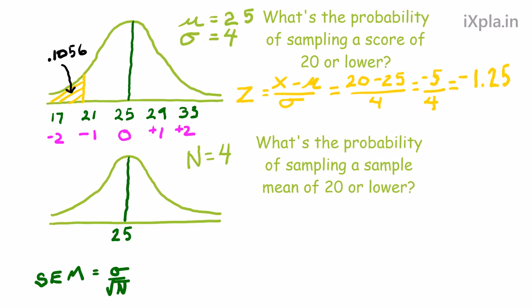Well, we figure that out by using the SEM, the standard error of the mean. We plug in the numbers we have, the sample size and the standard deviation from the population, and we get the SEM of 2. In other words, we're going to step up and step down from 25 in two units. So we go 27, 29, and we go down 23 and 21.